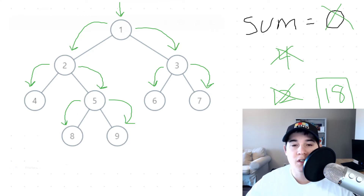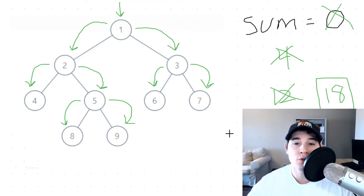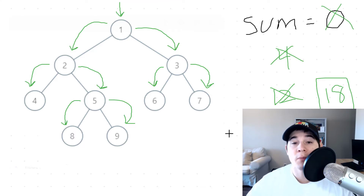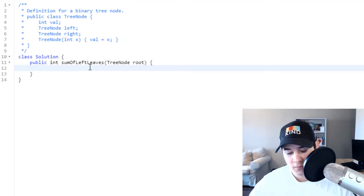As you can see, in order to get this sum value of 18 we had to go through every single node in our binary tree. Let's implement this recursive solution.